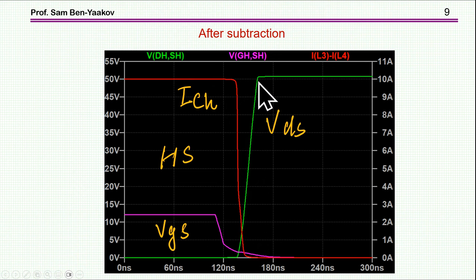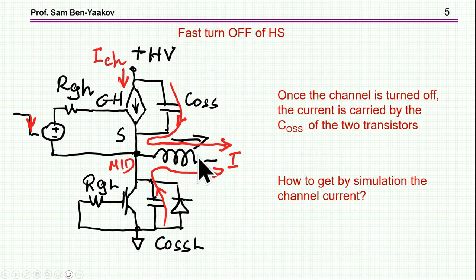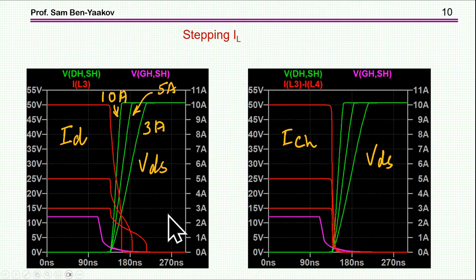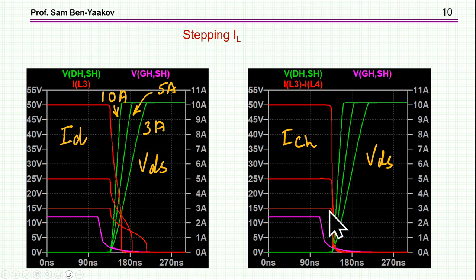This rise now depends on the current of the inductor. The larger the current, the faster will be this transition and the faster will be the dV/dt. It has nothing to do with the transistor itself — it has to do with the inductor. The inductor is actually determining the rate at which this voltage is changing, so the rate of voltage change is a function of the current. The rate of the current drop is a function of how fast the transistor is turned off, which has to do with the resistance of the turn-off resistor. Here I am showing what happens with different currents in the inductor — the larger the current, the faster is this transition.